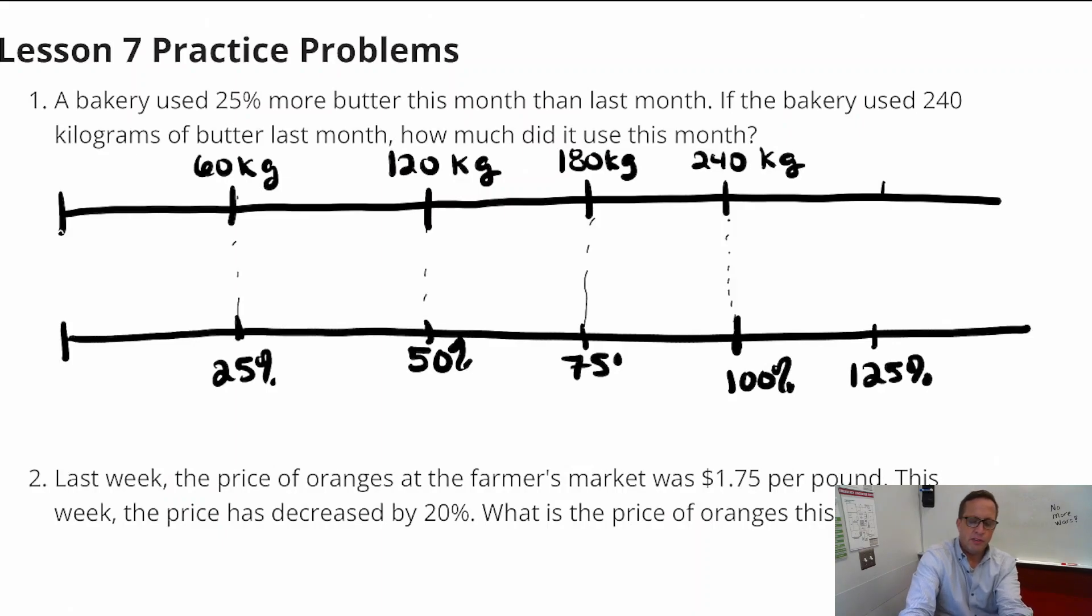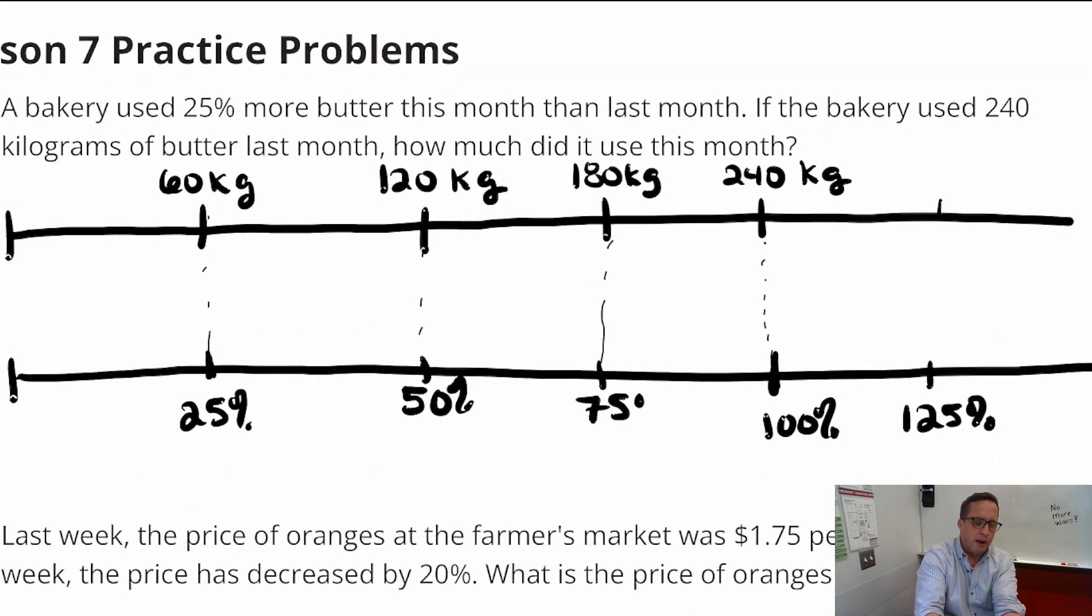And we can kind of keep going here that I can make this 125%. Because this is asking about an increase, 25% more butter. Now it's really easy now that we have to set up. I know it's not the easiest thing in the world to set up double number lines. But now it's pretty simple. You can see everything. You can see that every 25%, it's increasing 60 kilograms, right? Every time it goes up 25%, it goes up 60 kilograms.